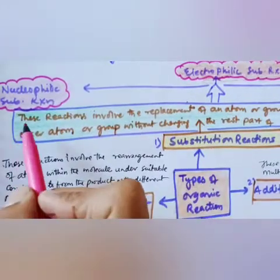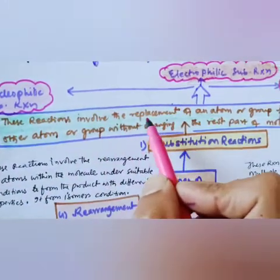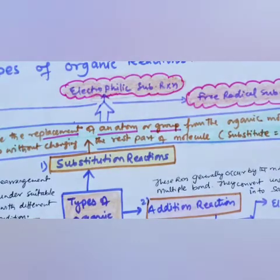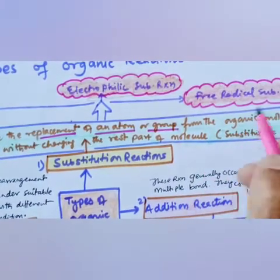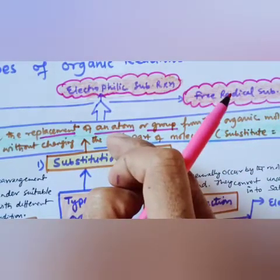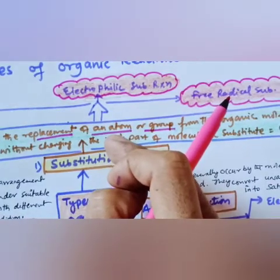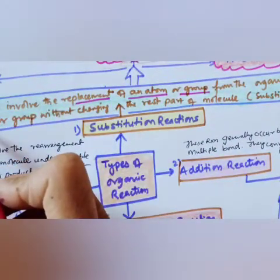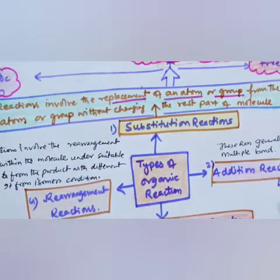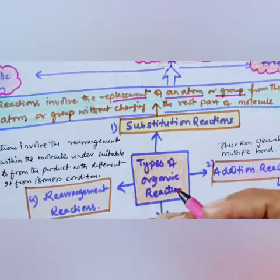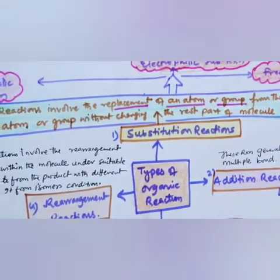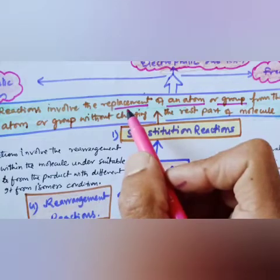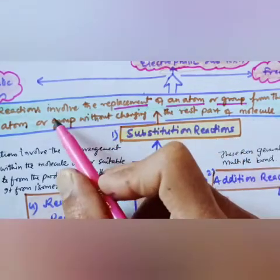Substitution reactions involve the replacement of one atom or group from the organic molecule. One atom — it can be hydrogen or any other atom — or a group from a hydrocarbon is replaced by some other atom or group. Like in football or cricket, when one player is injured, a substitute player comes in and plays in his place — similarly, any group or atom of a hydrocarbon can be replaced by another.